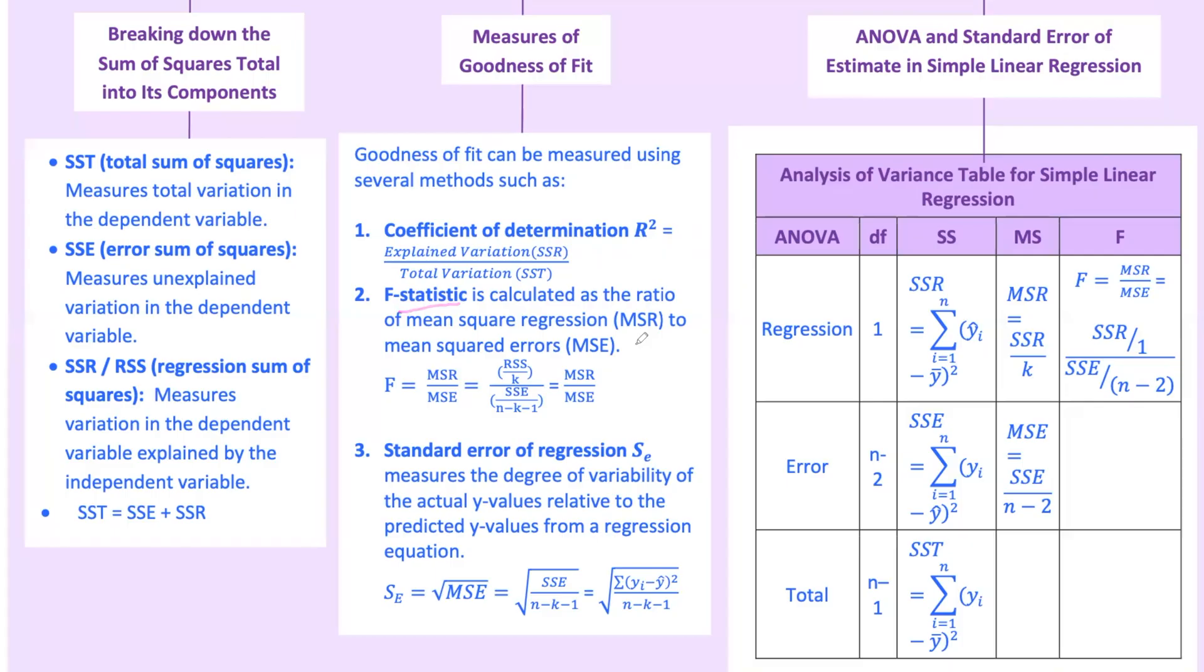F-statistic tells us whether our overall model is statistically significant. A high f-statistic indicates that the model explains a significant portion of the variation in y. Standard error of estimate measures the accuracy of the predictions. It's the standard deviation of the error terms. A smaller standard error of estimate indicates a better fit, meaning your model's predictions are closer to the actual values. These metrics together help you understand how well your model captures the relationship between the variables and whether the results are statistically significant.